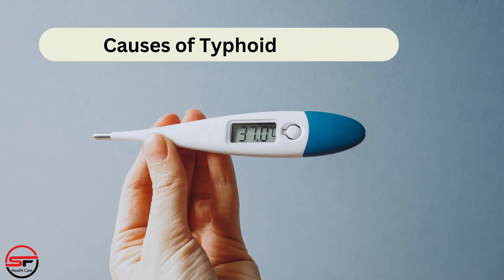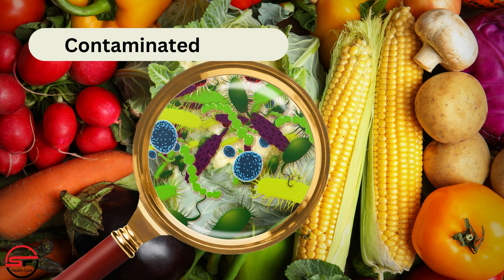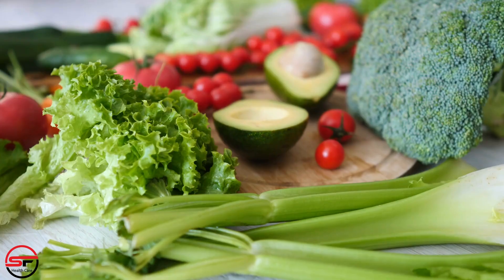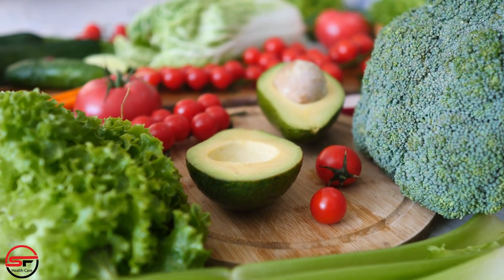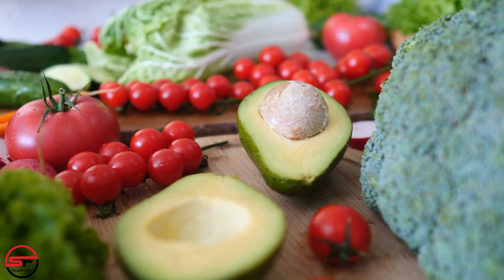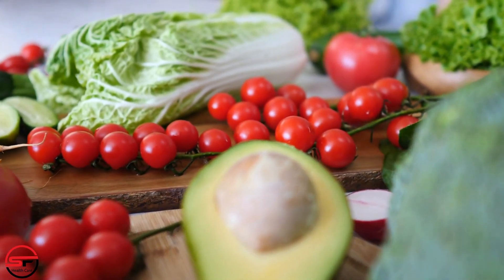Causes of typhoid fever. Contaminated food: typhoid fever is often spread through the consumption of food prepared by an infected person who hasn't washed their hands properly after using the toilet. Food items such as raw fruits and vegetables, which are eaten uncooked, can become contaminated if washed with contaminated water.